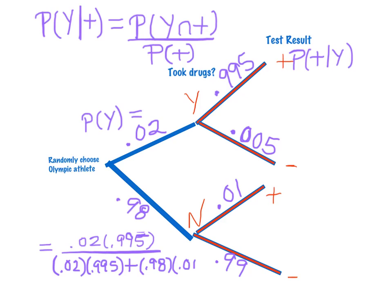My denominator will be those who actually took drugs and tested positive, or those who did not take drugs and tested positive. So this is how this equation will look. This will lead me to a probability of 0.67, which essentially says that about two-thirds of athletes who test positive actually took drugs.